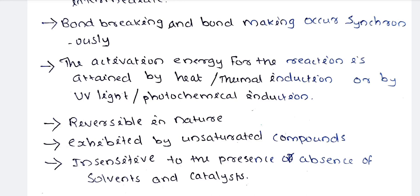Pericyclic reactions are reversible in nature — all pericyclic reactions are reversible. They are exhibited by unsaturated compounds, meaning compounds that contain double bonds.